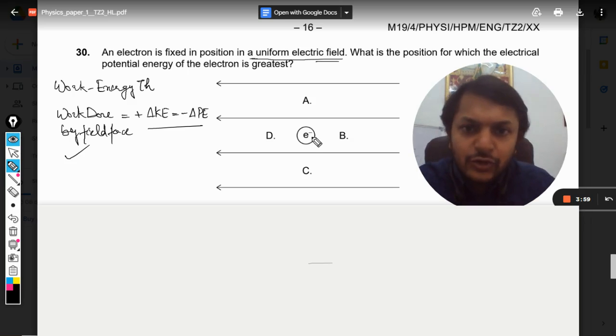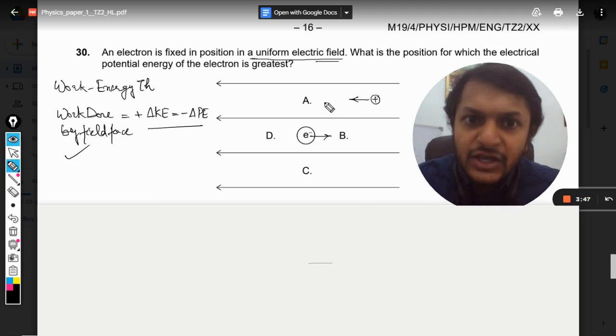For example, this electron will be experiencing a force in the opposite direction because it is negatively charged. If there was a positive charge placed inside this electric field, it will be experiencing a force in the left direction.